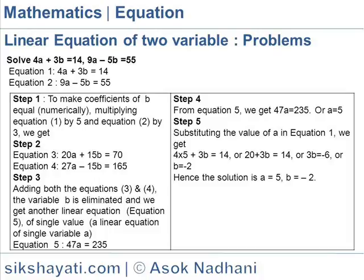In step three, adding both equation three and equation four, the variable b is eliminated, and we get another linear equation — equation five — in a single variable a.